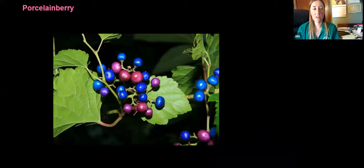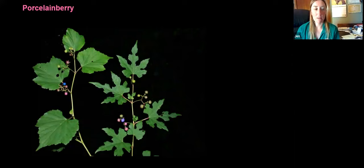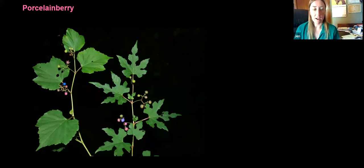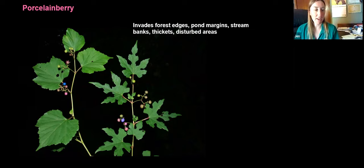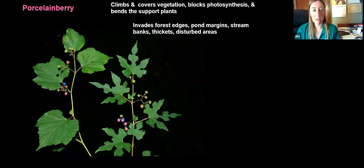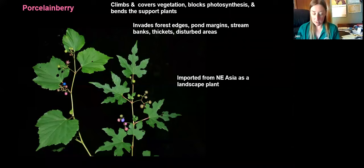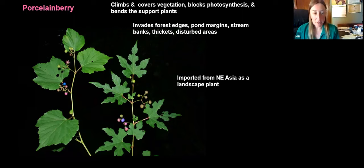The next vine is porcelainberry — a type of grapevine with really amazing looking berries, clearly brought here for landscaping purposes. It can have different shaped leaves: typical grape-shaped leaves and also deeply lobed leaves. This can invade forest edges, fields, and thickets, growing over top and smothering native vegetation, blocking light and bending the trees it grows on. It was imported from Northeast Asia for ornamental purposes. If you're familiar with areas near Cape May, porcelainberry is an enormous problem there, covering just about everything — a serious invasive plant.